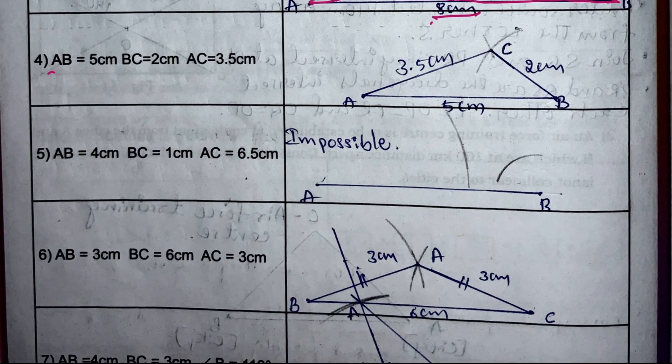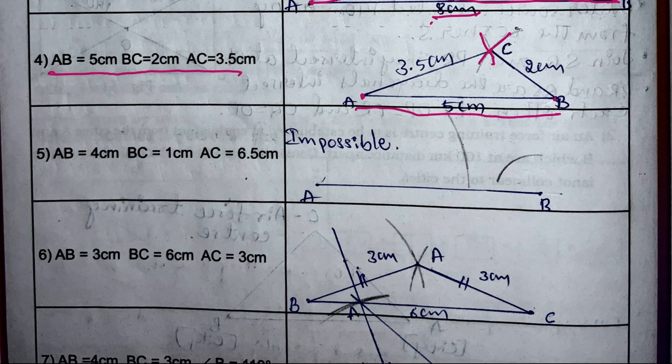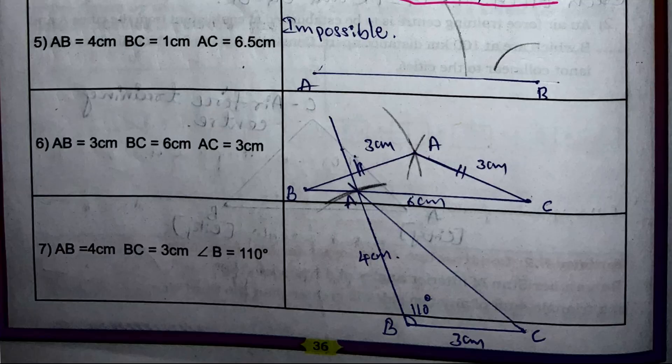Fourth example: AB = 5 cm, BC = 2 cm, AC = 3.5 cm. Construct AB = 5 cm. Taking A as center, draw an arc of radius 3.5 cm; taking B as center, draw an arc of radius 2 cm. They meet at a point — join it. It is possible to construct this triangle.